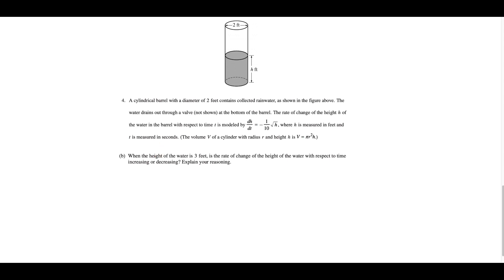For part B, when the height of the water is 3 feet, is the rate of change of the height of water with respect to time increasing or decreasing? This is a very dangerous trap. If you rush and just plug 3 into the derivative, observe it's negative, and choose 'decreasing,' that's wrong — they're not asking if the height is increasing or decreasing. They're asking if dh/dt itself is increasing or decreasing, which means we need the derivative of dh/dt.